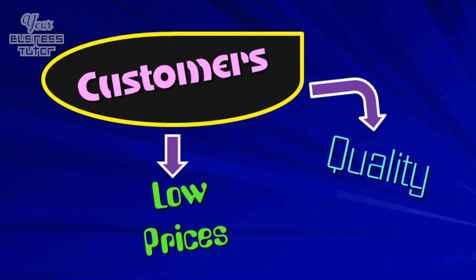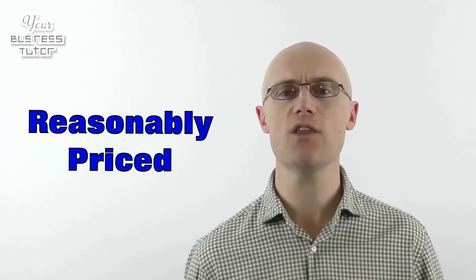Moving on to the interests of external stakeholders, let's first have a look at customers. Customers are interested in a business offering quality products that are good value for money. This is because customers will want to buy products that do what they're meant to do - for example, taste great, look cool and don't break. But more than that, they'll want them to be reasonably priced so that they can afford them.